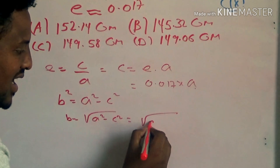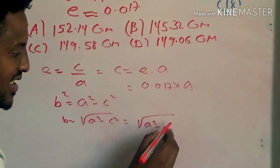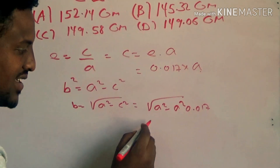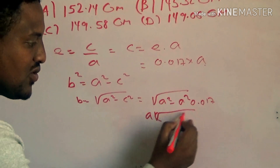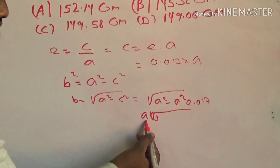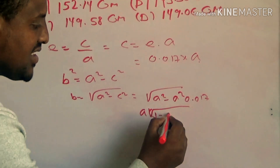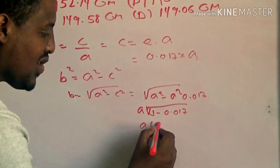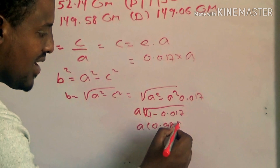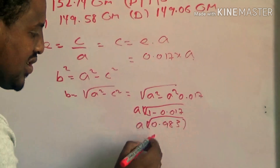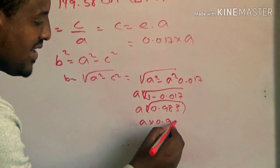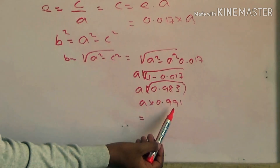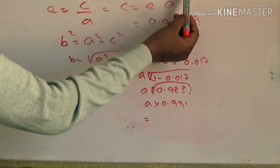We compute: radical of a-squared minus c-squared, where c equals 0.017 times a. So b equals radical of a-squared minus (0.017a) squared. A-squared times (1 minus 0.017) is 0.983. Then a-squared times 0.991, so b is approximately 0.991 times a — b-squared is very close to a-squared.